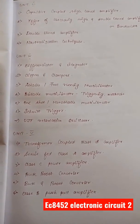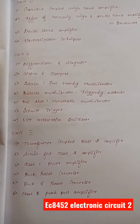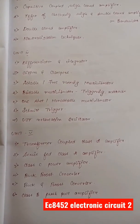Unit 5, we have transformer coupled class C amplifier, series fed class C amplifier, class C amplifier and converters: buck-boost converter, buck converter, boost converter, and class B push-pull amplifier.